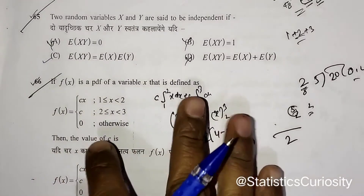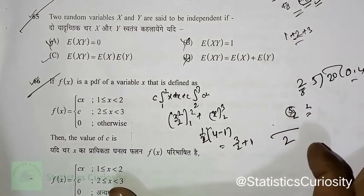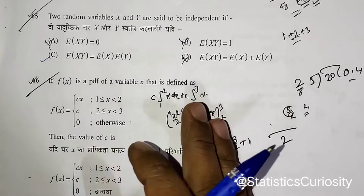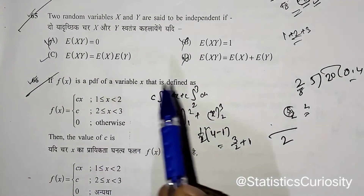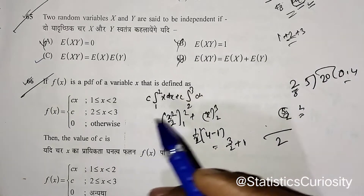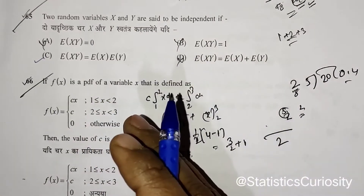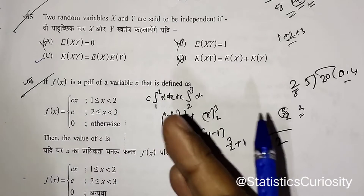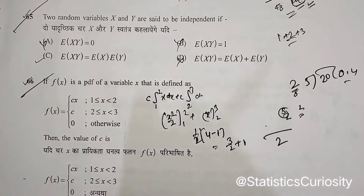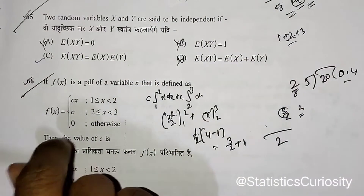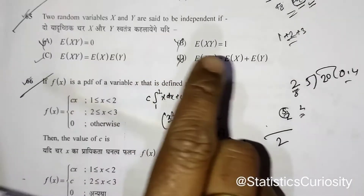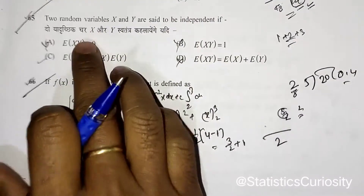Hello dear friends, this is Devashi Chanai. Welcome to my channel Statistics Curiosity. This is the second video — the second part of the video series containing solutions of the Assistant Professor Statistics exam conducted by Uttar Pradesh Higher Education Service Commission (UPHESC). These questions are important for SSC CGL, Assistant Statistical Officer exams, other government exams, as well as GATE and CSIR NET. You can watch the earlier video by clicking the link in the description box.